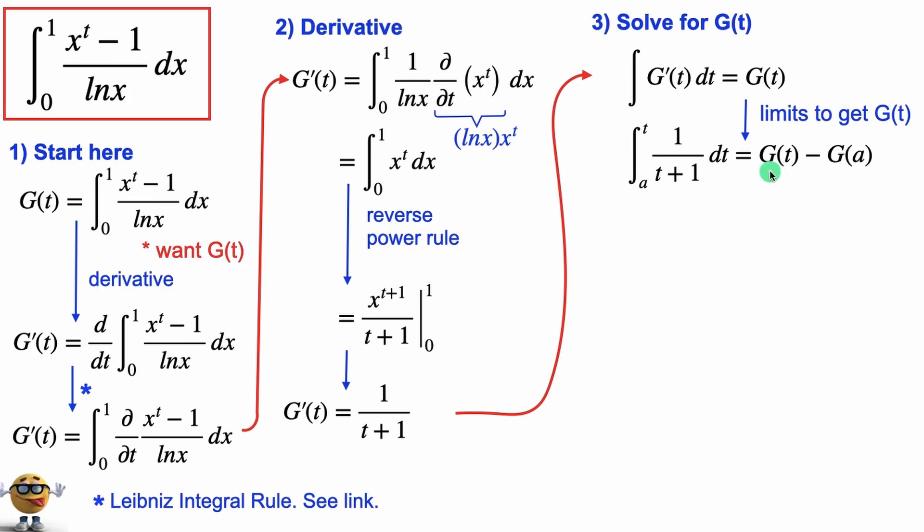So if we plug in say from a, we'll call it a, to t the integral of this is G(t) which is what we want minus G(a) which we don't know. Now this left hand side we can evaluate, the integral that's our friend ln of t plus one. And now we think about what is a, well a can be any number so let's pick a to be zero because if a is zero then we plug in zero for t we got ln of one that's zero so if a is zero, G(a) is zero, so that's cool. So if we go from zero to t then we're left with the integral of G(t) equals ln of t plus one.